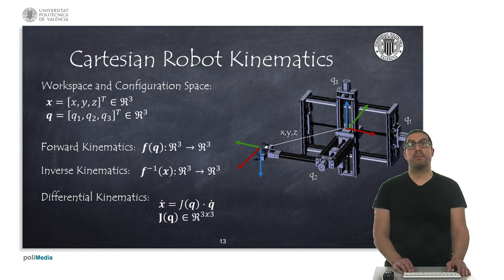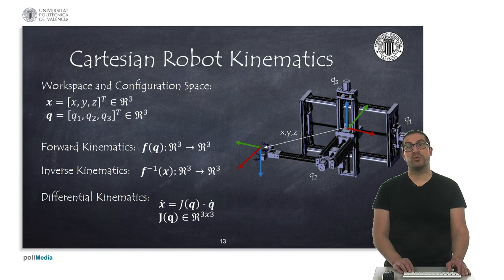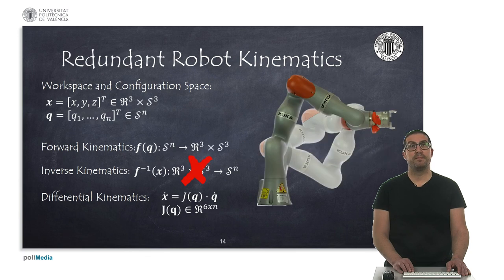The kinematic model of a Cartesian robot is a very simple model — linear and totally decoupled. Each of the prismatic joints are directly translated into movements in each of the directions of the end-effector: joint position q1 affects x, q2 affects y, and q3 affects the z position of the end-effector.